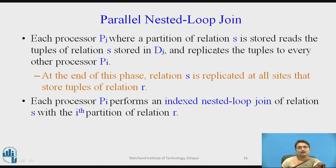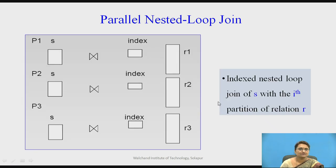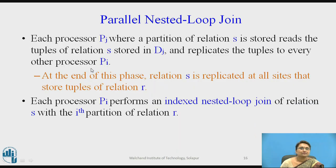In detail, every processor pj stores a partition of relation s and relation r. It replicates the tuples to every other processor pi. At the end of this phase, relation s is replicated at all sites that store tuples of relation r, while relation r is partitioned across all processors. Every processor pi then performs the indexed nested loop join — applying indexing on the partitions of r and comparing every tuple of replicated s with every tuple of r, in parallel.